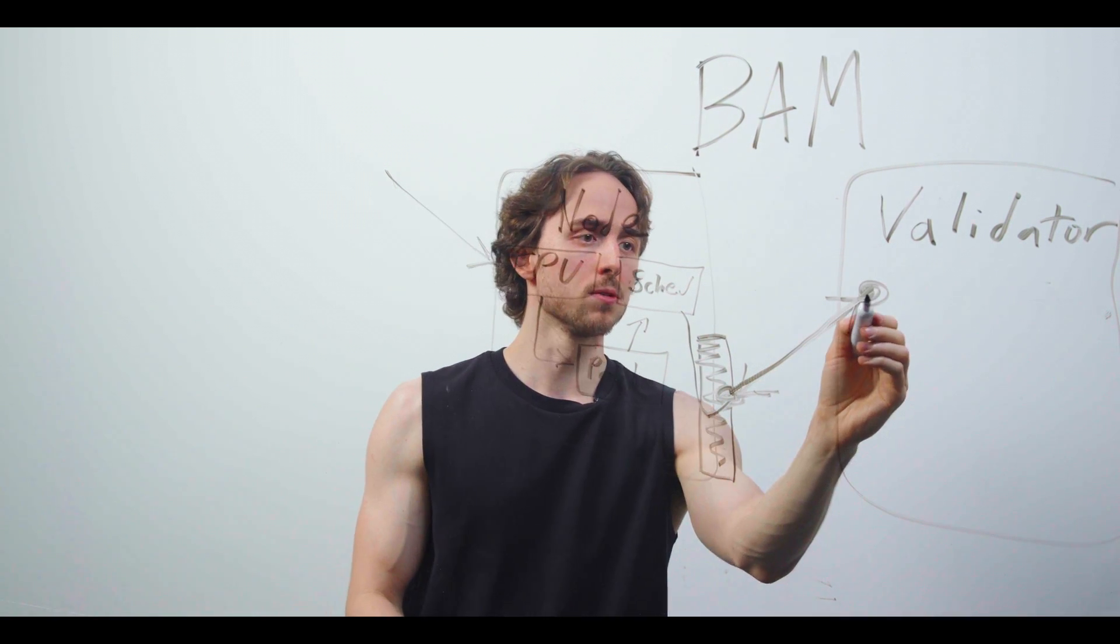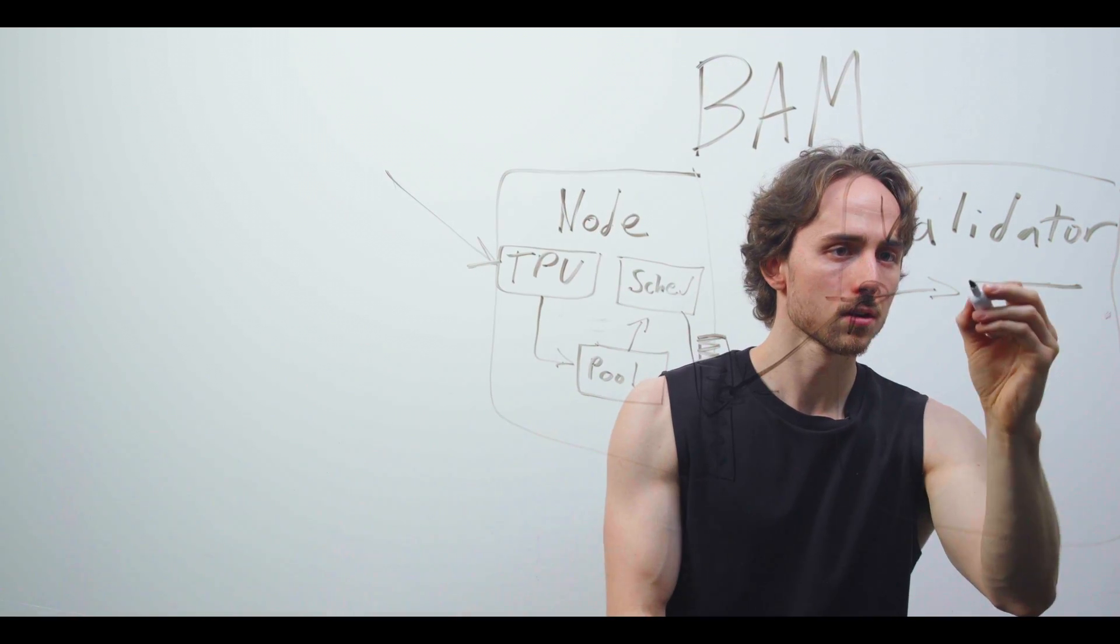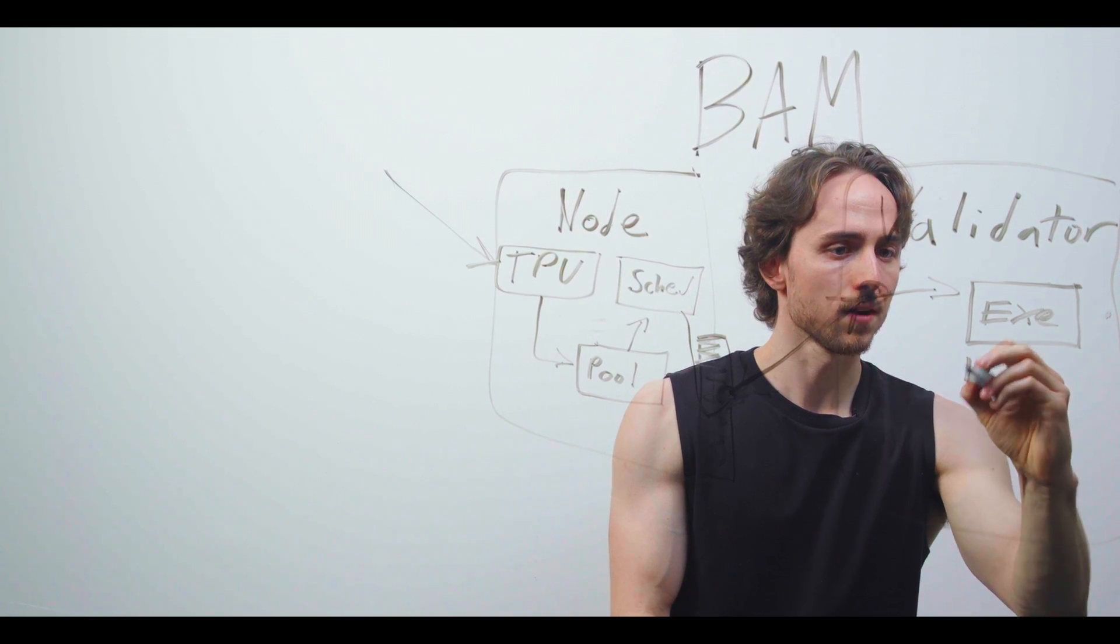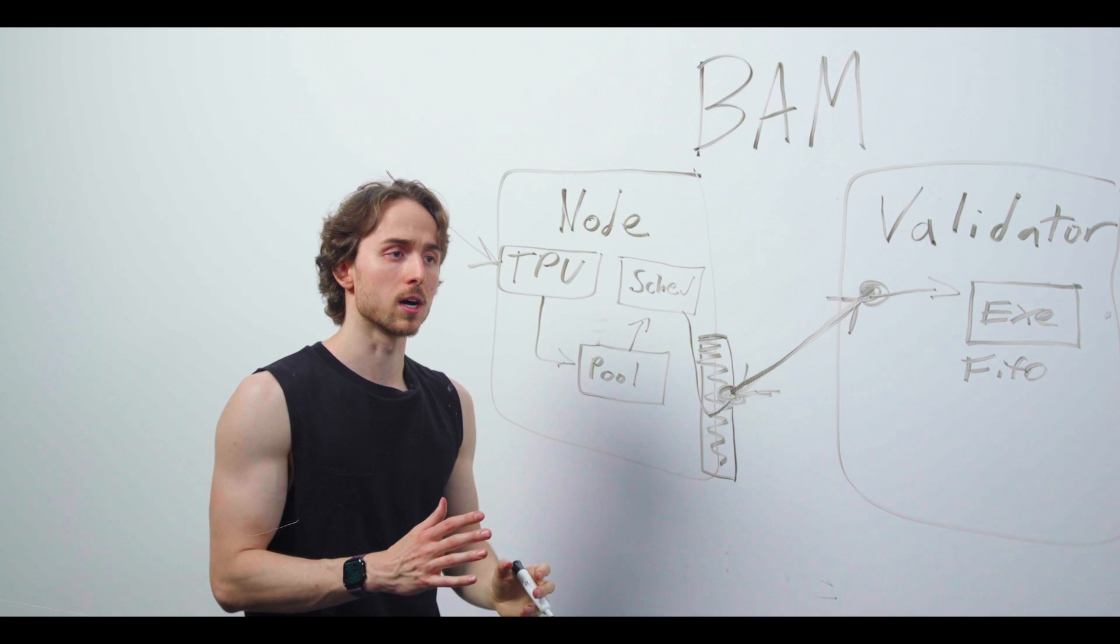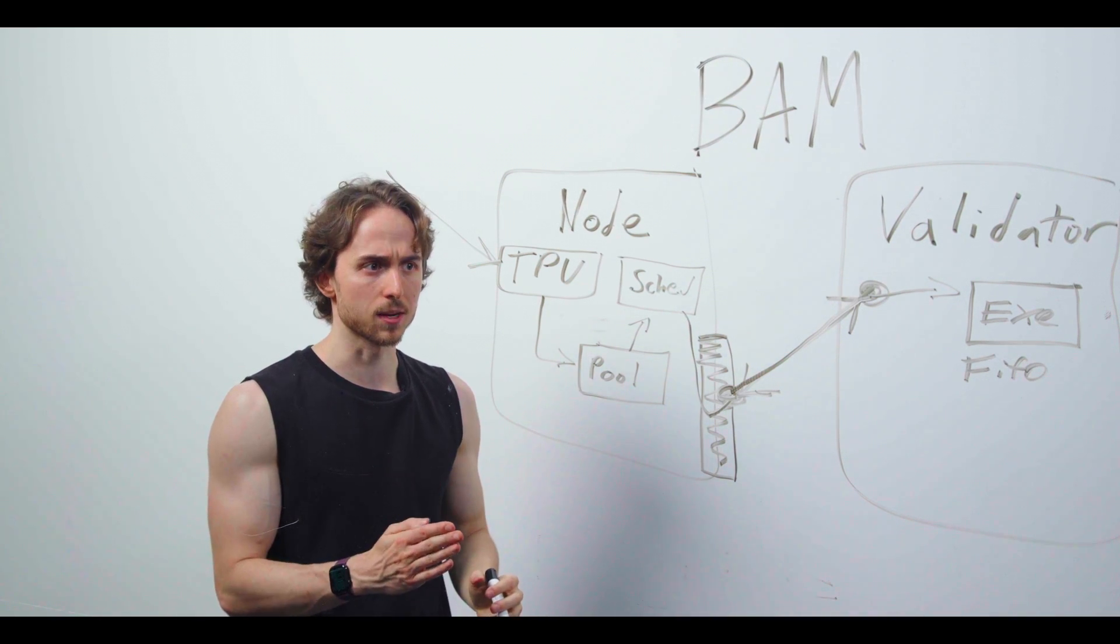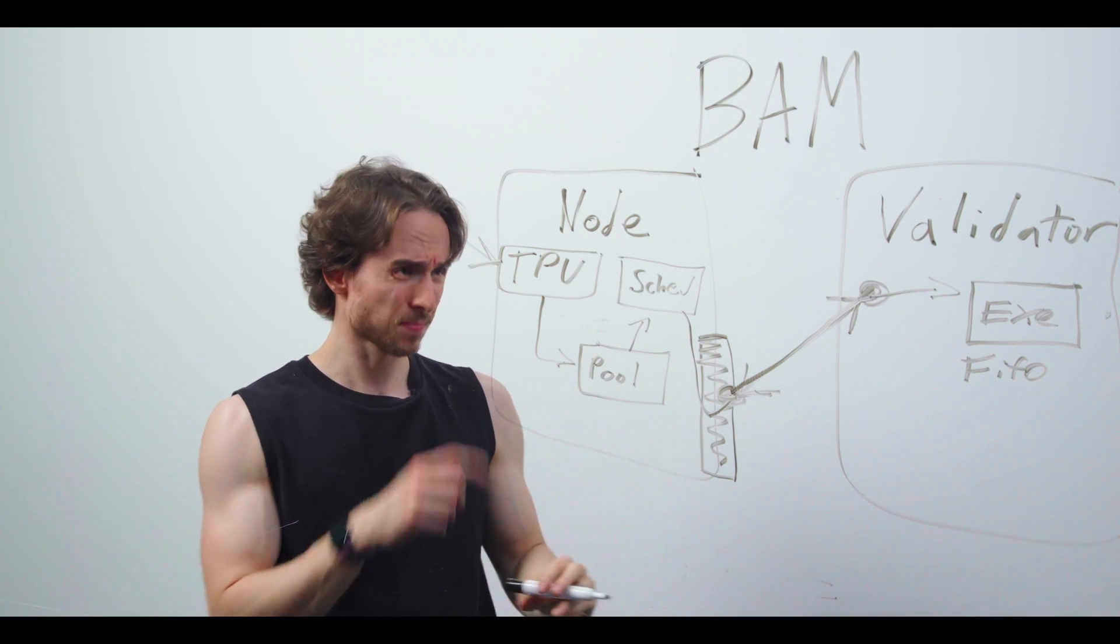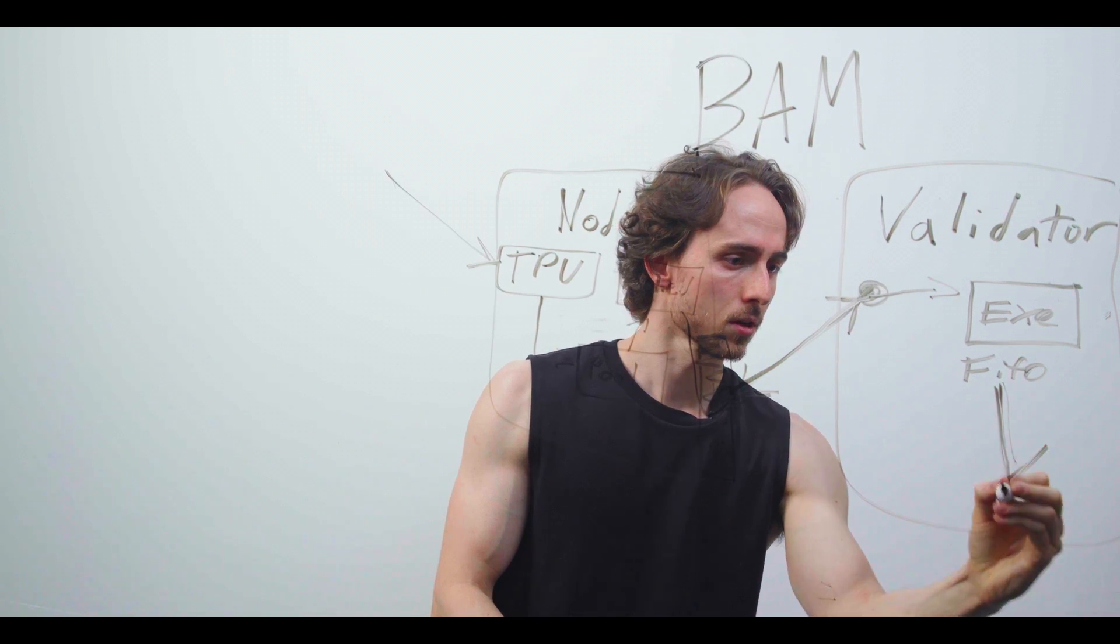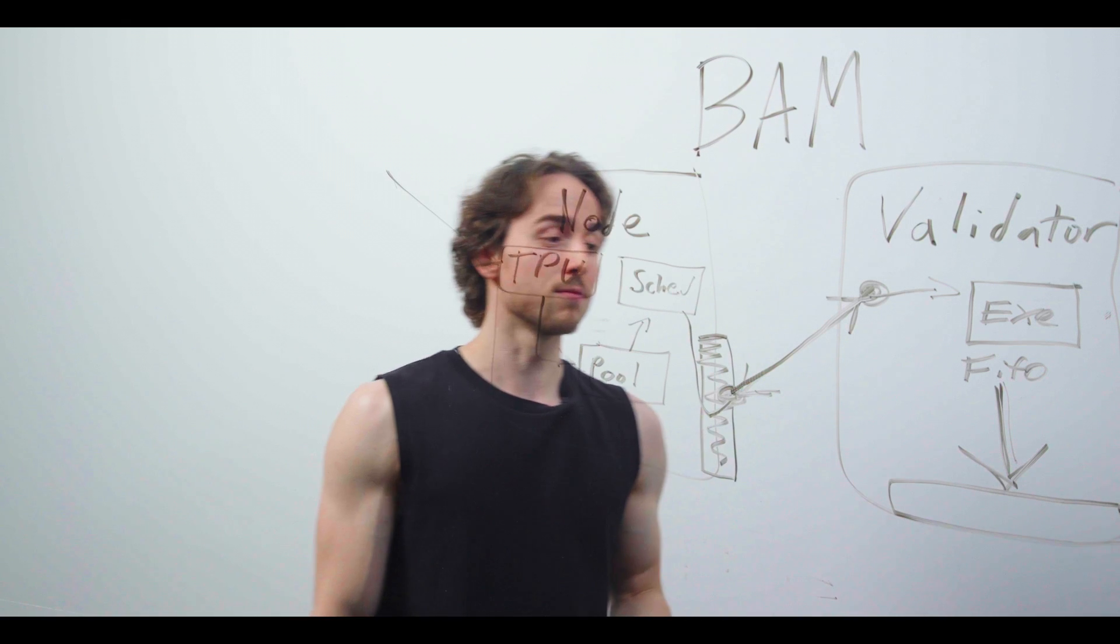The validator then uses a FIFO executor, obviously concurrently and parallel optimized FIFO using account aware locks, and then executes this into the final state.